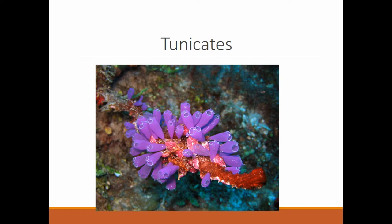This is called a sea squirt. They go through a change in life cycle where the larval or embryonic stage is free-swimming and has the dorsal nerve cord and the notochord. It swims and finds a place to land, and then its body metamorphosizes into the adult form. So even though this looks like a coral or a sponge, it's actually a tunicate — a sea squirt.